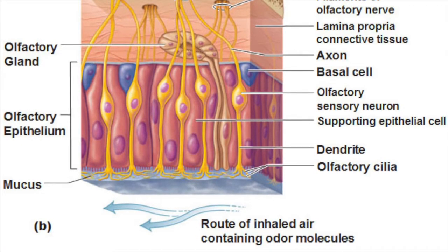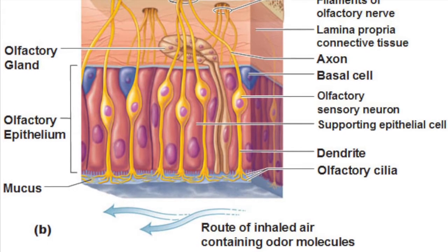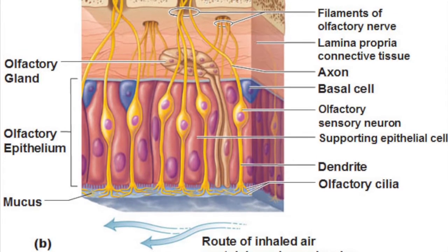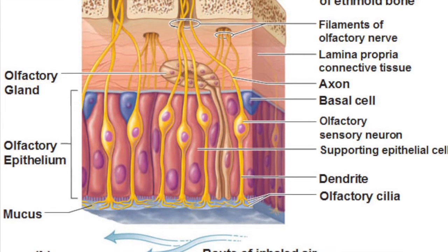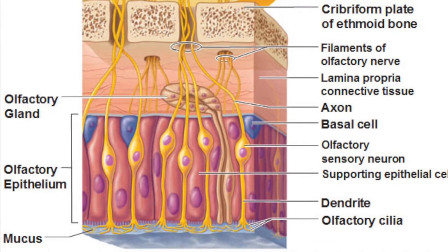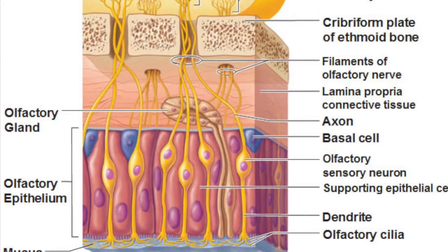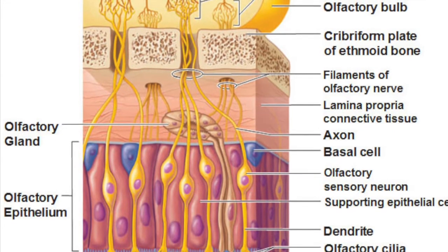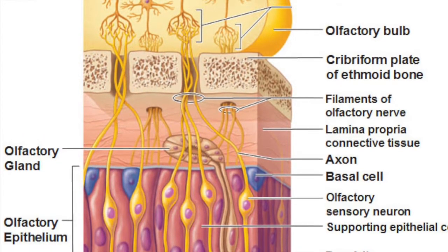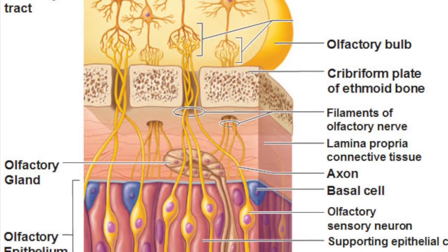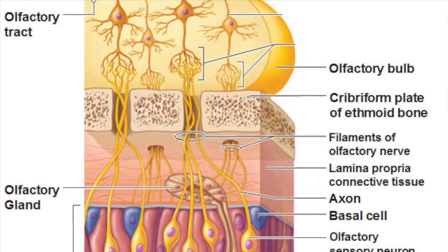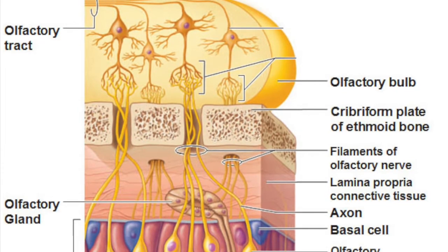Axons of the olfactory sensory neurons form the olfactory nerves that synapse in the overlying olfactory bulbs, the distal ends of the olfactory tracts. There, the filaments of the olfactory nerves synapse with the mitral cells, which are second-order sensory neurons in a complex structure called the glomerulus. When the mitral cells are activated, impulses flow from the olfactory bulbs via the olfactory tracts to the piriform lobe of the olfactory cortex. From there, two major pathways take information to other parts of the brain. One pathway brings information to part of the frontal lobe just above the orbit, where smells are consciously interpreted and identified. Only some of this information passes through the thalamus.